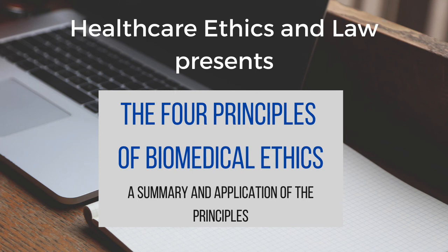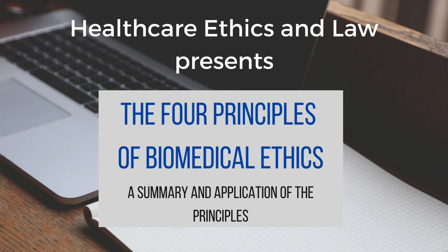Firstly, we can think of it as distributing in terms of need — who needs these resources the most? Are there people with pre-existing health conditions or people at higher risk of developing conditions who need more resources allocated to them? The second principle is the maximising principle, where we're trying to maximise good with the resources we have — a utilitarian approach to maximise welfare. And finally, we've got the egalitarian approach, which tries to provide equal access and health to everyone regardless of who they are. In most cases, we tend to take a combination approach.